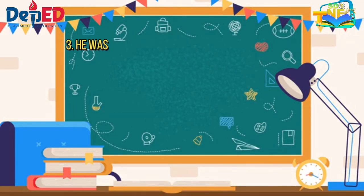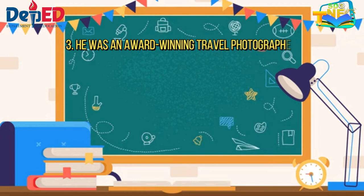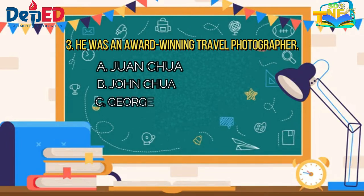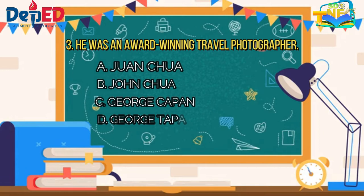Number 3: He was an award-winning travel photographer. A. Juan Chua, B. John Chua, C. George Capan, D. George Tapay. The correct answer is letter D — George Tapay.